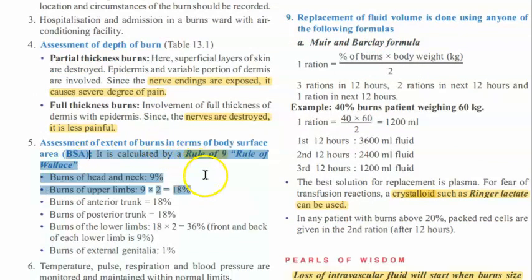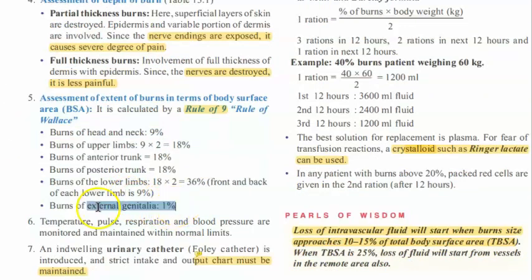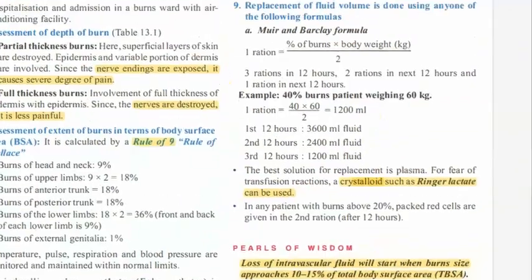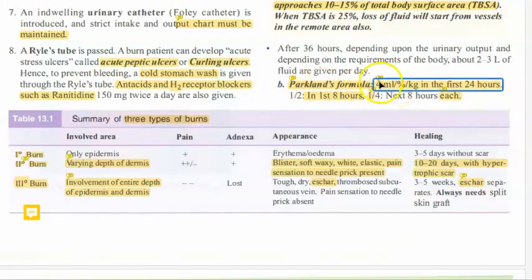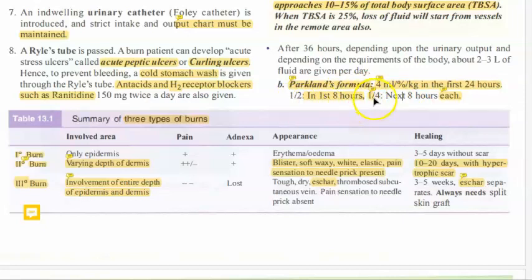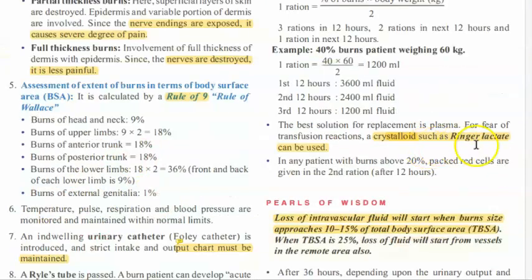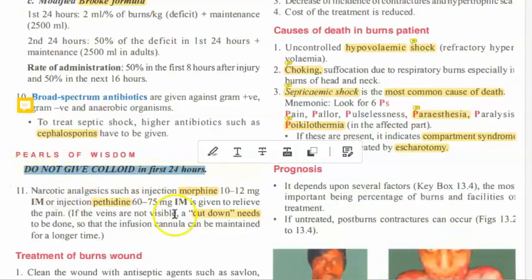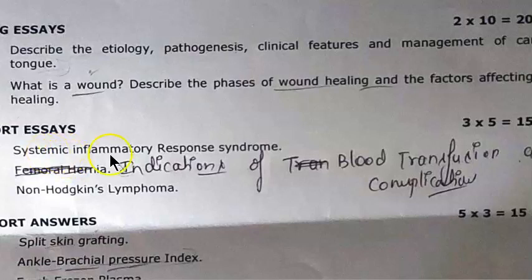For burns — a cause of SIRS — first aid is cold water. Assess burn extent using Wallace's Rule of Nines: each arm 9%, each leg 18%, front trunk 18%, back 18%, head 9%, genitalia 1%, totaling 100%. Fluid replacement uses the Parkland formula: 4 ml × percentage of burns × body weight (kg) in the first 24 hours — half in the first 8 hours, quarter in each subsequent 8 hours. Give crystalloid (Ringer's lactate), not colloid, in the first 24 hours.